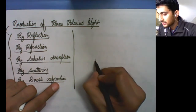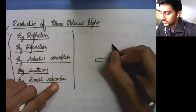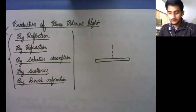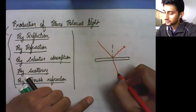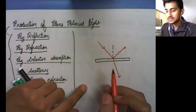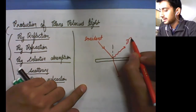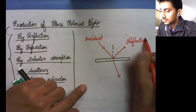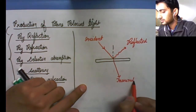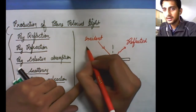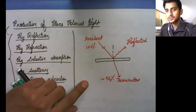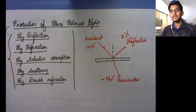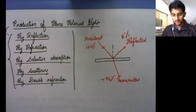Whenever light falls on a glass plate, some portion reflects back and some portion transmits. On average, if 100% intensity is incident, then approximately 92% transmits and 8% reflects. So 8% intensity of reflected light is very small.